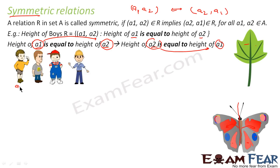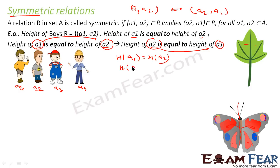Let's suppose this guy is a1, this guy is a2, this guy is a3, and this guy is a4. When I say that height of a1 is equal to height of a2, this also implies height of a2 is equal to height of a1. This kind of relation is called symmetric relation — the equals relation is symmetric.